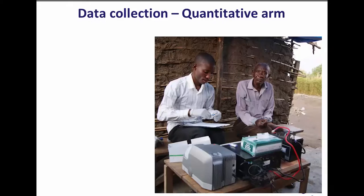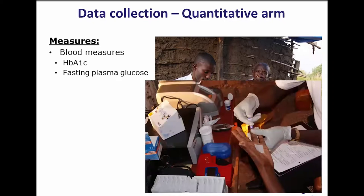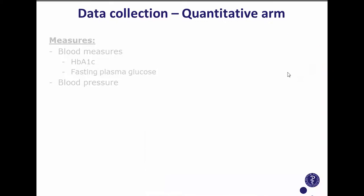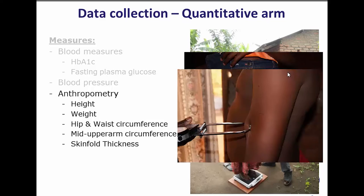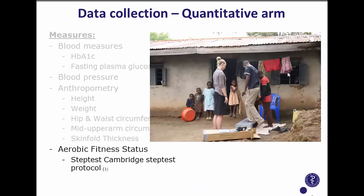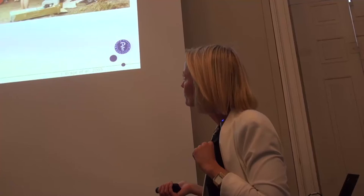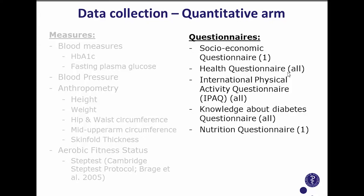We had to bring our own power since most households had no electricity. We measured HbA1c and fasting plasma glucose, blood pressure, and conducted anthropometry: height, weight, waist and hip circumference, mid-upper arm circumference, and skinfold thickness for body fat estimates. We also conducted a step test to estimate aerobic capacity.